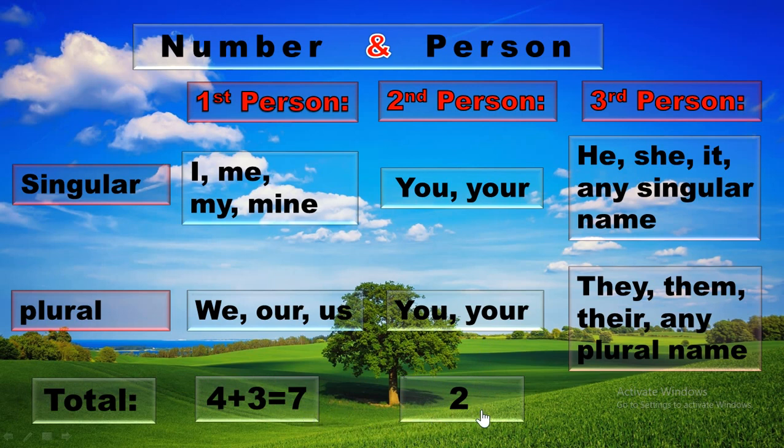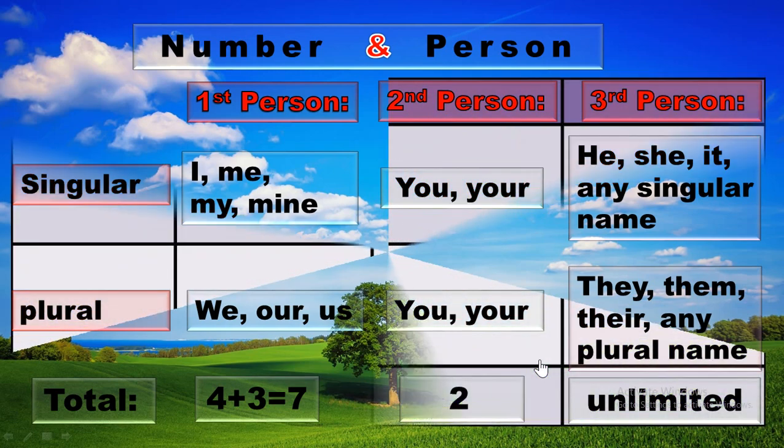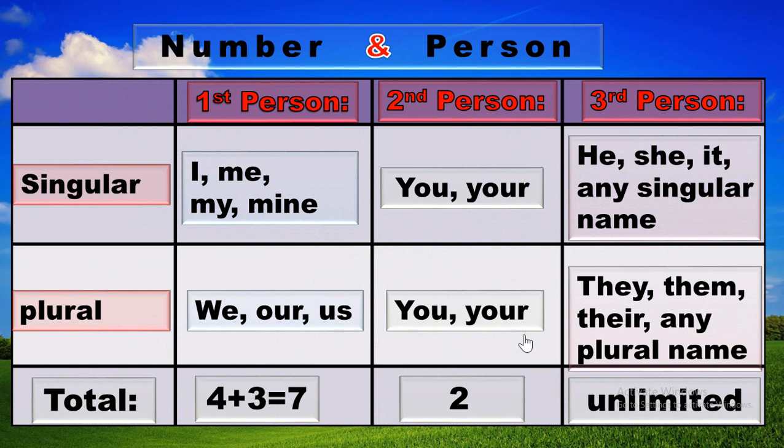First person has seven words, second person has two words. In total, first person and second person has nine words. Without these nine words, all the other words of the world will be counted as third person, and the number of third person words is unlimited. I hope you got it. If you have any confusion, you can repeat the video and take a screenshot for taking notes.